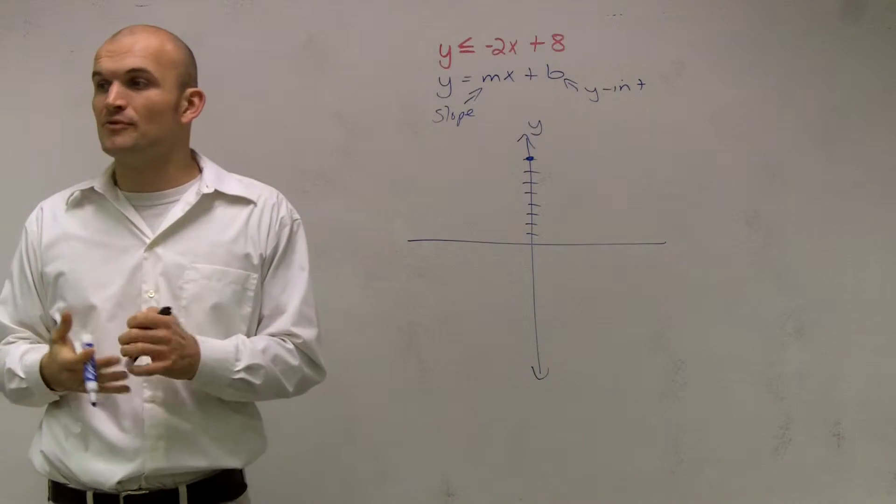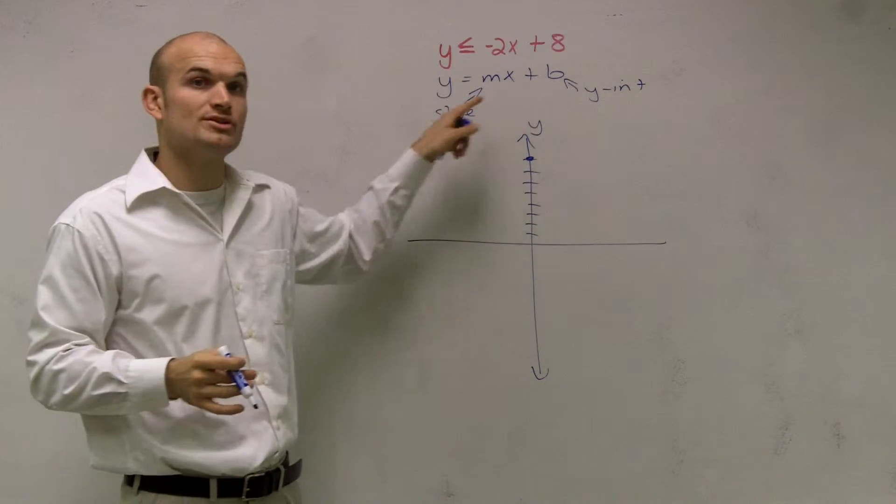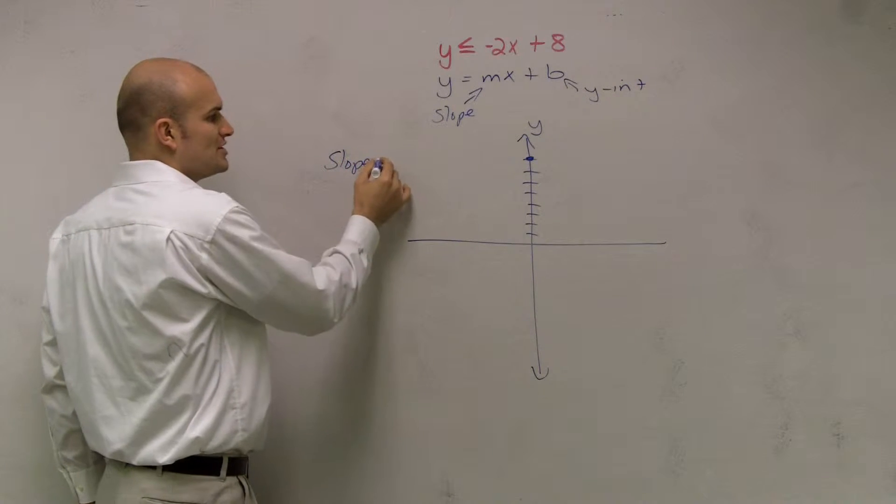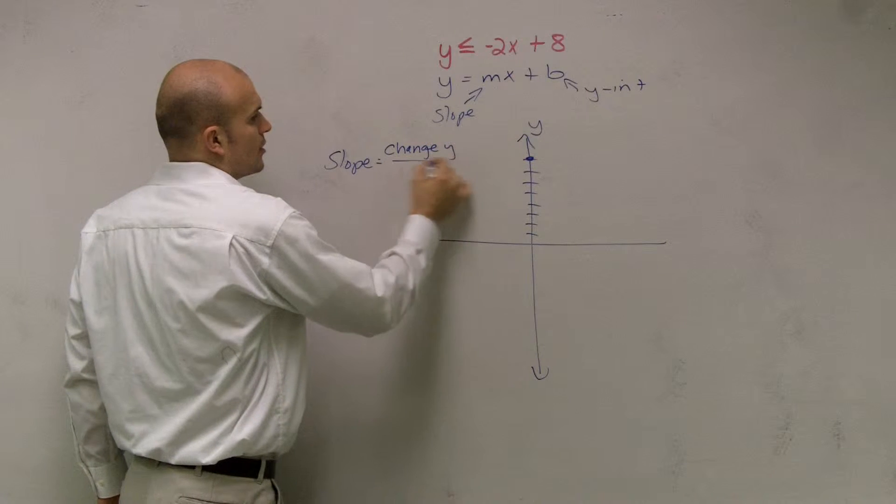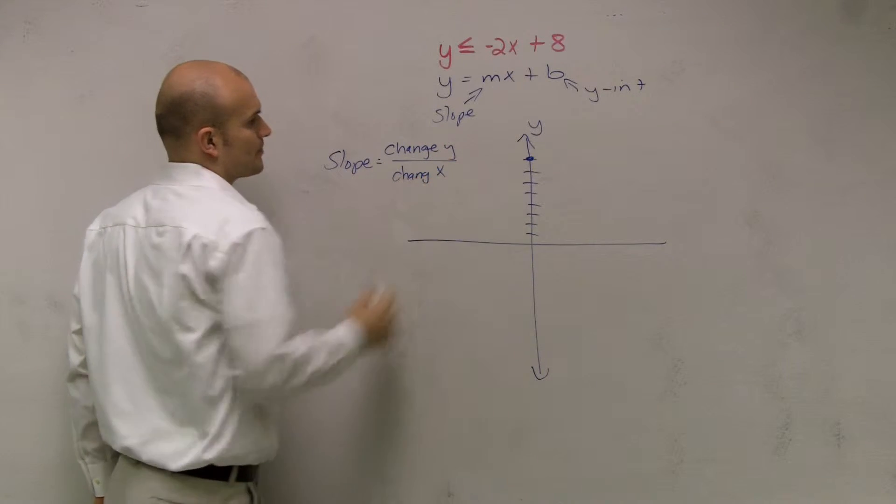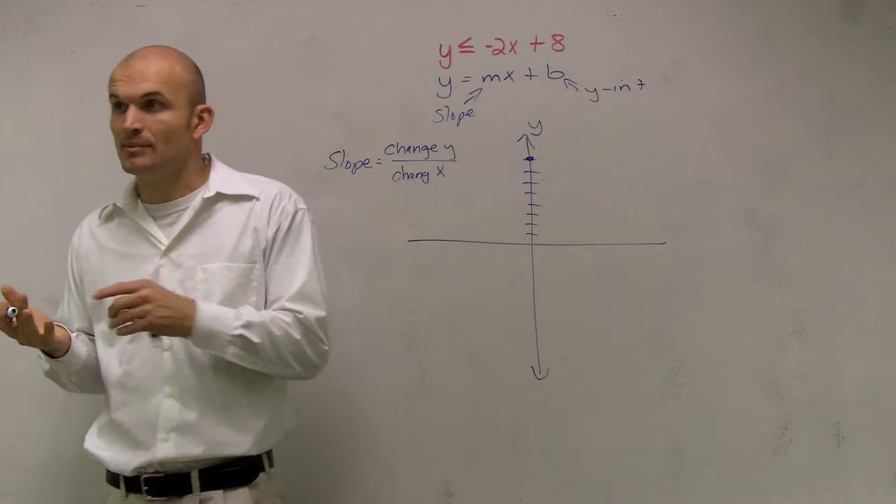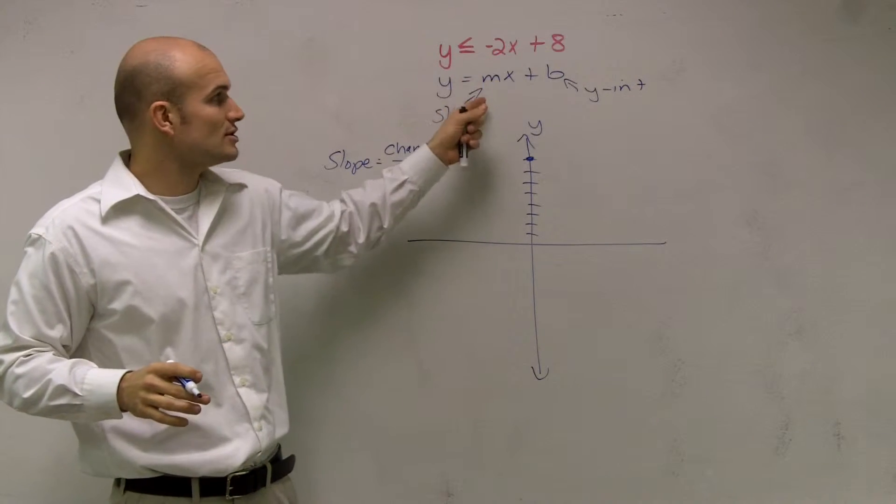Then we need to find our next point. We can use the slope to do that. The slope was a ratio, which was your change in your y-coordinates over the change in your x-coordinates. So between any two points on the line, the change between them horizontally and vertically is going to be represented by your slope.